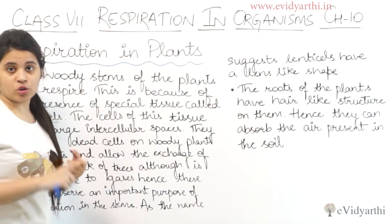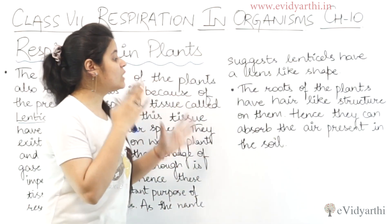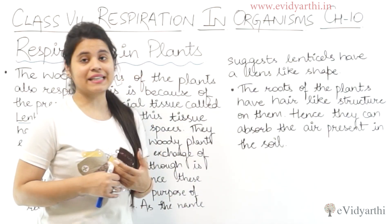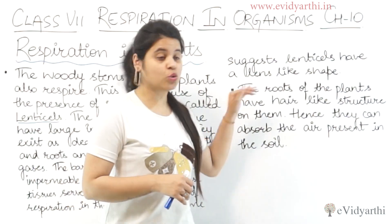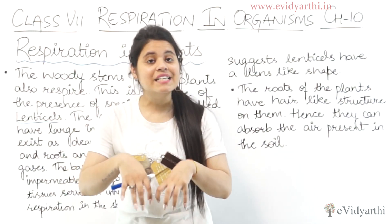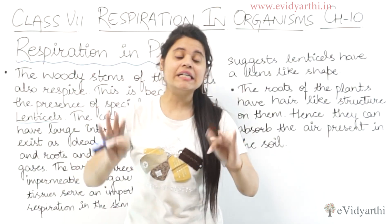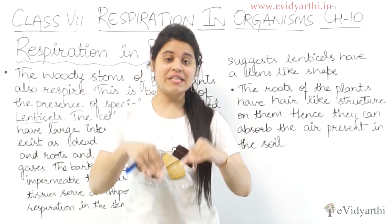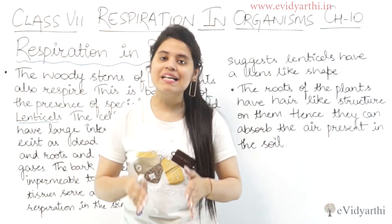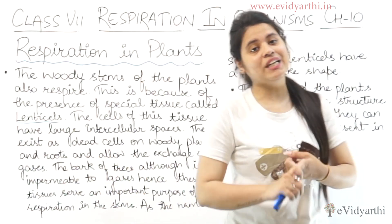Now let's look at roots. Leaves respire via stomata, wooden stems respire via lenticels. The roots of plants have hair-like structures on them, and through these they can absorb the air present in the soil. Roots are underground, not exposed to the atmosphere, so they absorb gases from the soil. This is how roots carry out respiration.